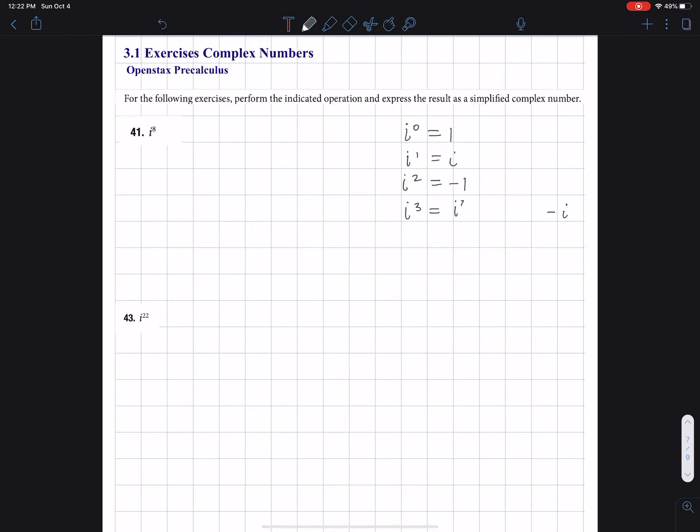Then if I come to i to the fourth, what do I get? I get i squared times i squared, which is negative one times negative one. And that's one. And it takes us back to where we started.